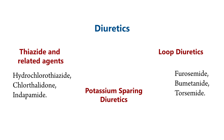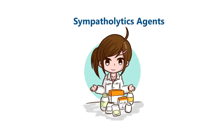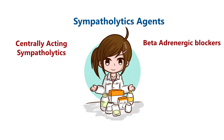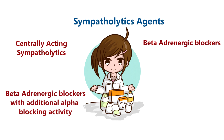Potassium sparing diuretics include Amiloride, Triamterene, and Spironolactone. Sympatholytic Agents are classified into four groups: Centrally Acting Sympatholytics, Beta Adrenergic Blockers, Beta Adrenergic Blockers with Additional Alpha Blocking Activity, and Alpha Adrenergic Blockers.